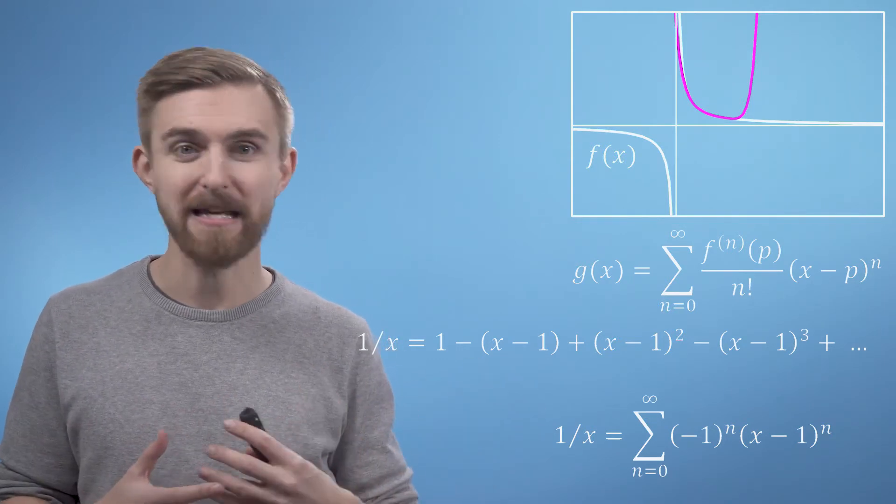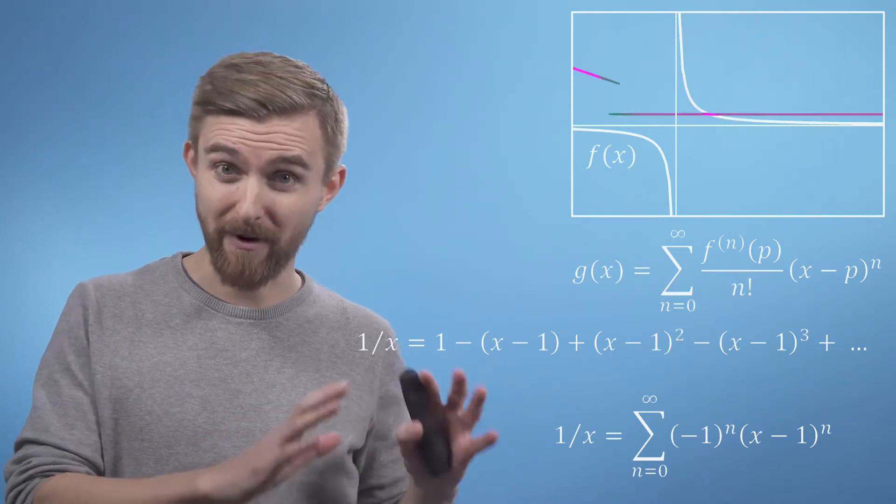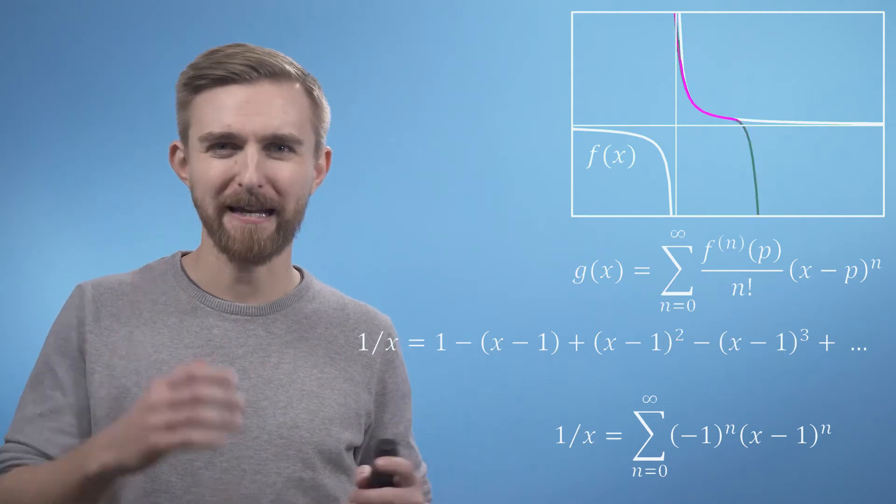Secondly although the function is gradually improving for larger values of x you can see the tail wildly flailing around as the sign of each additional term flips from positive to negative and back again.